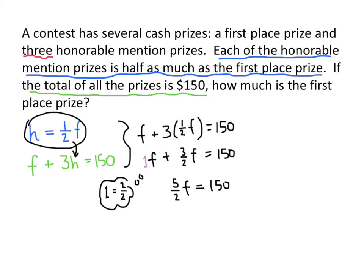Now we want to get rid of that five halves that we have there. So what we're going to do is we're going to multiply both sides by the reciprocal. Multiply by two fifths on both sides of our equation. On the left-hand side, the two fifths and the five halves go away. And on the right-hand side, 150 times two fifths, that turns out to be 60. So what we figured out is that F equals 60.